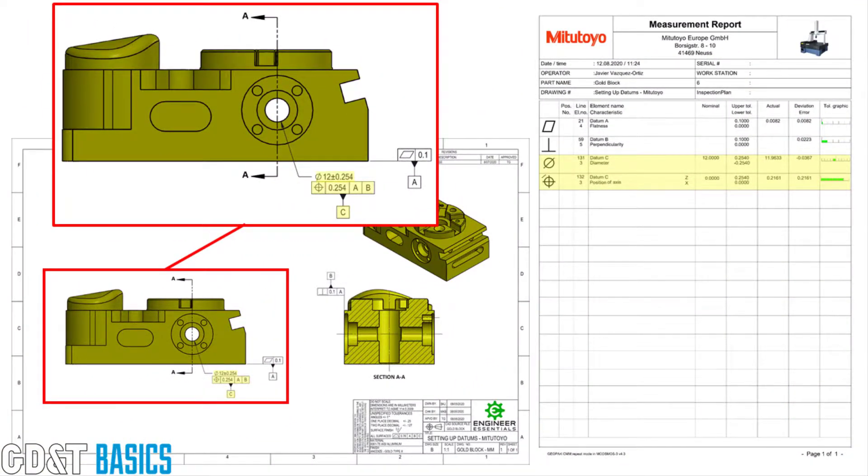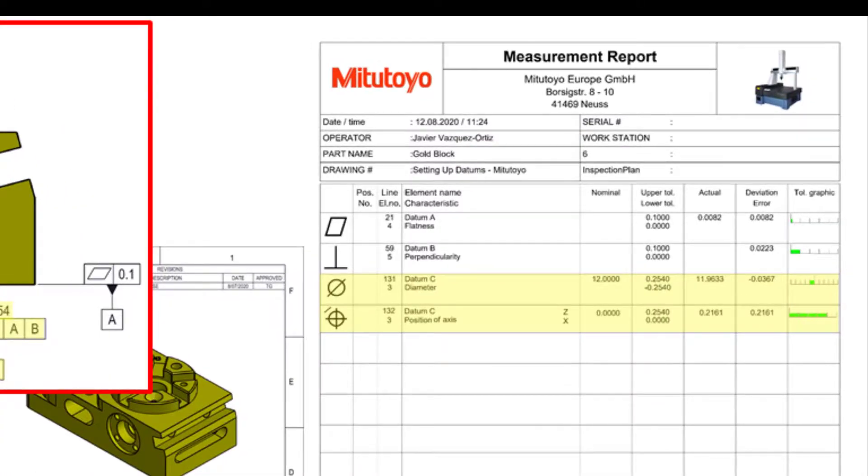The measurement report pops up immediately and we can look at the diameter in the two highlighted rows there. The first one's diameter. And we see on that one we had a nominal of 12 millimeters, plus or minus 254 microns. And the actual size came in at 11.963. And our deviation then from nominal was 36 microns. So we came in a little undersized, but well within our tolerance. So we have good size there. The next row down is the position report. On that one we had a tolerance of 254. Remember it's diameter. So it's a diametric tolerance zone. Cylinder on our report.